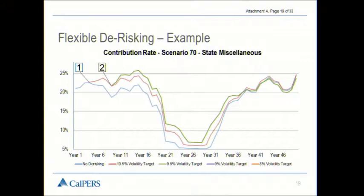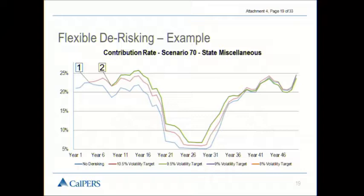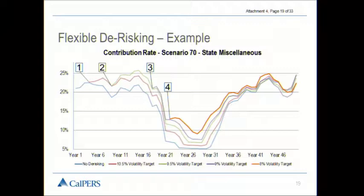After the second de-risking event, a very similar pattern. Unfortunately, we had some rather poor years just after the de-risking event, which is why that contribution increases right there — but it's not increasing much more than if we had not done that second de-risking. On this one, you can actually see a crossover as some of the losses late in the simulation were avoided by having lower investment volatility. It keeps going and going.